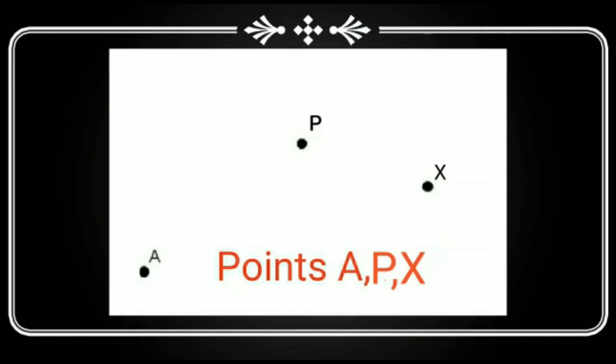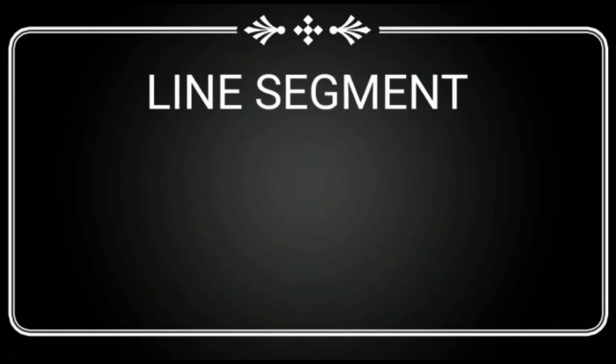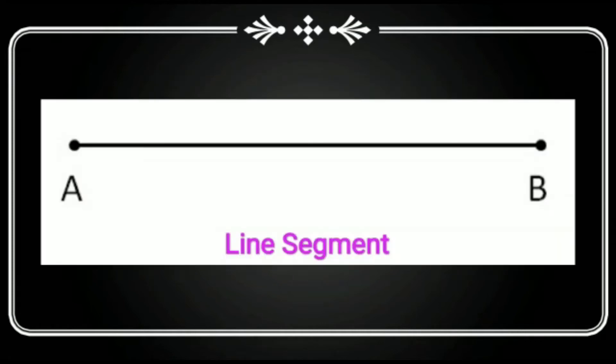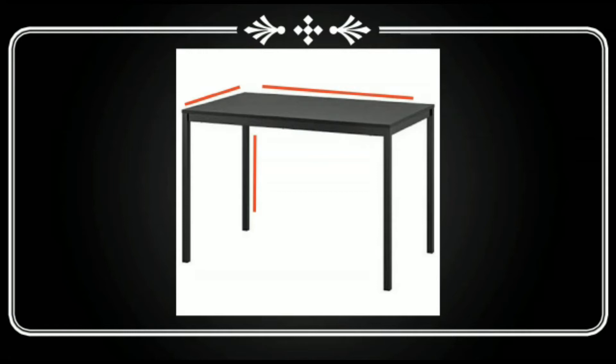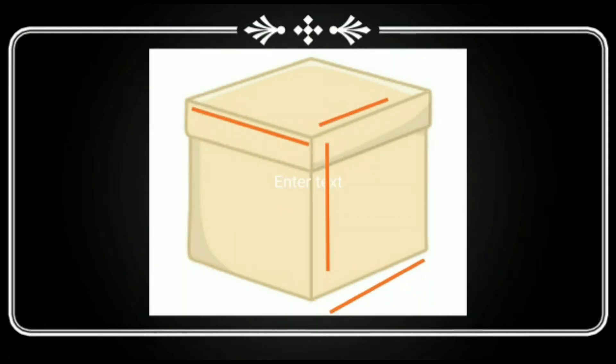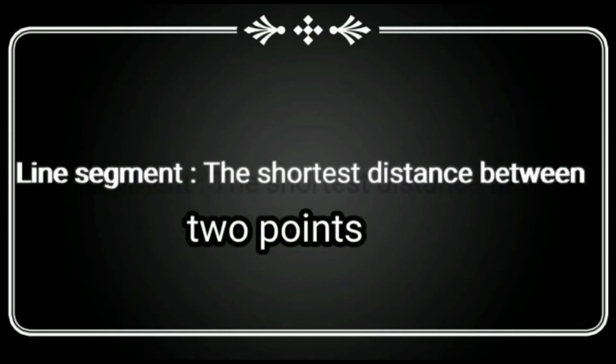The next one is line segment. It is obtained when we join two points. It looks like a stretched thread or the ends of your table or the edges of some box. A line segment is the shortest distance between two points.